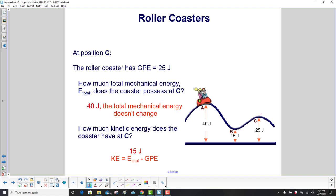Now we're at position C, where we have a gravitational potential energy of 25 joules. What's the total mechanical energy? It's still 40 joules. It's the amount of energy we had at the start because there are no external forces acting. So energy is conserved.